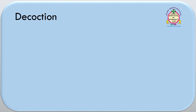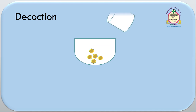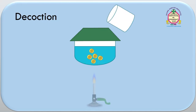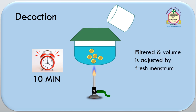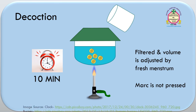The next process is decoction. In this process, the drug is kept with water and boiled for a specific time — especially 10 minutes. After this, it is filtered and the volume is adjusted by fresh menstruum. In this process also, the marc is not pressed.